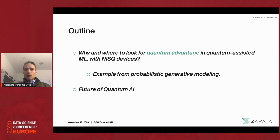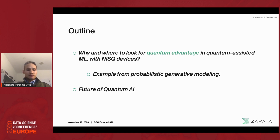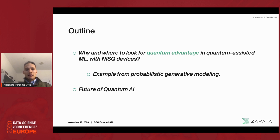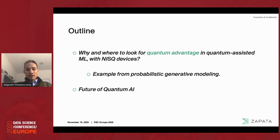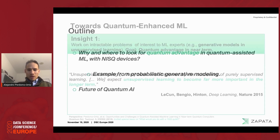In particular, we focus on what are called NISQ devices. NISQ is an acronym that stands for Noisy Intermediate Scale Quantum device — basically the devices available right now over the cloud, like Google's device, IBM, IonQ, Honeywell. They are very small in scale and still noisy, but the question is: what can we do with them? I will provide a specific example in probabilistic generative modeling.